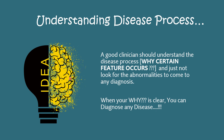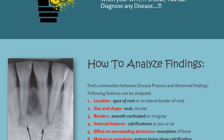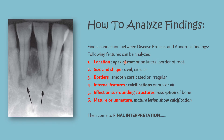Understanding the disease process is essential. A good clinician should understand the disease process and not just look for abnormalities to come to a diagnosis. A good clinician should think about why certain features occur — when your 'why' is clear, you can diagnose any disease. Findings should be connected with the disease process. There are various types of findings; let's see how to analyze them.